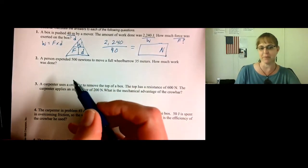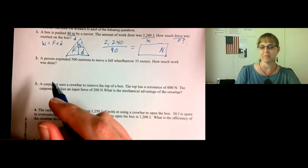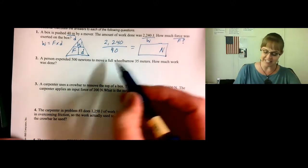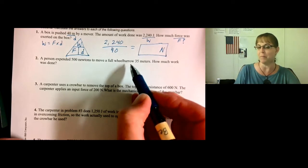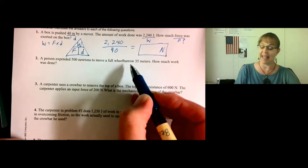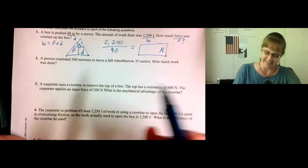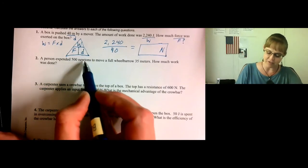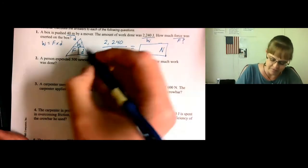Number two. A person expended 500 newtons to move a full wheelbarrow 35 meters. How much work was done? Yes, it is a wheelbarrow, even though everybody says wheelbarrow. A person expended 500 newtons. Oh yeah, newtons. Force newtons, fig newtons. Force.